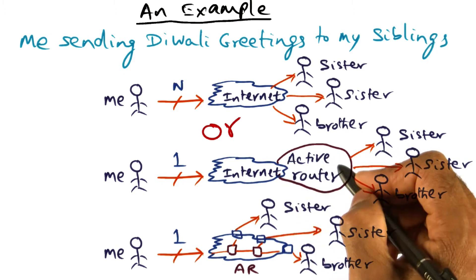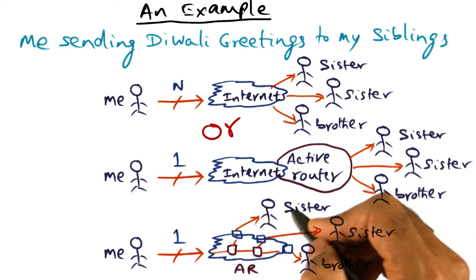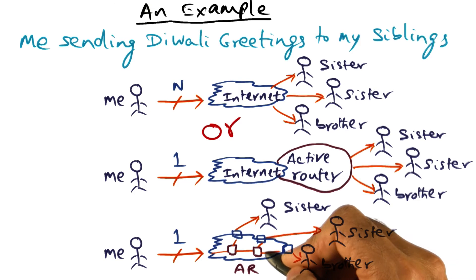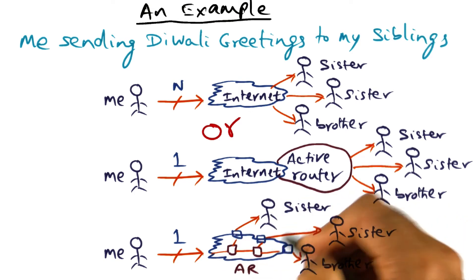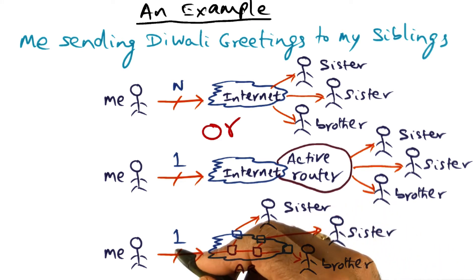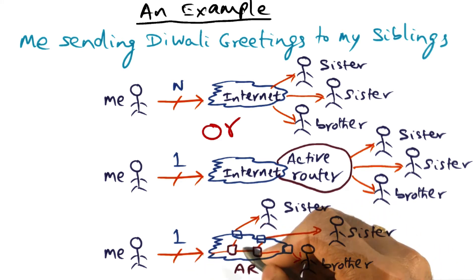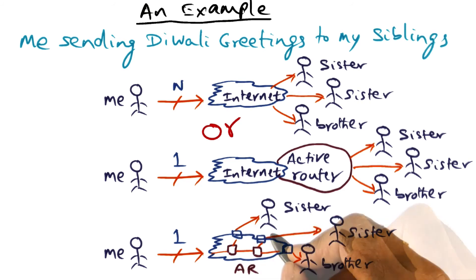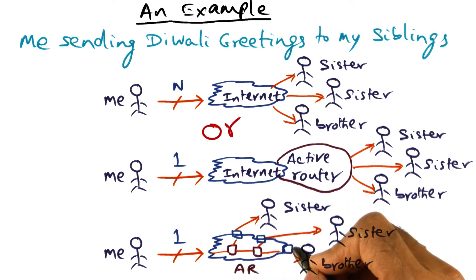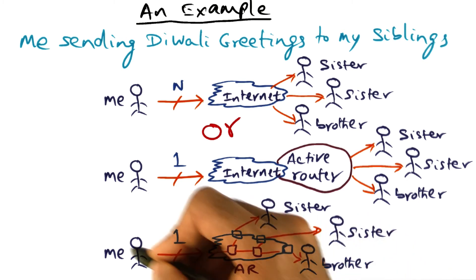Of course, we can generalize this idea, and say that this idea of an active router is going to be spread out throughout the internet, so that even if my siblings are distributed all over the world, then I could still send a single message from my source, and it gets demultiplexed along the way, depending on where all the eventual recipients are for this particular message.